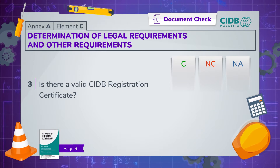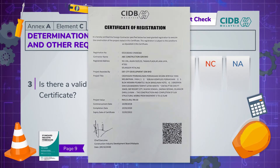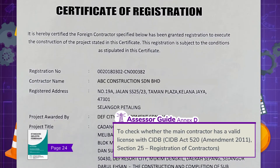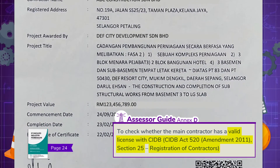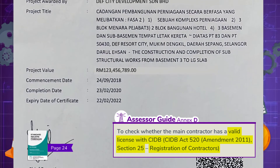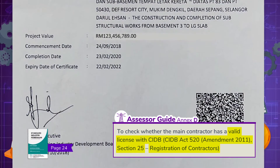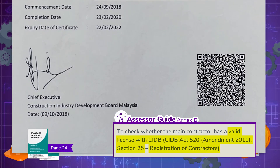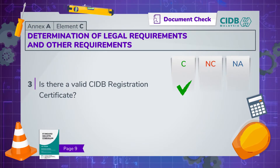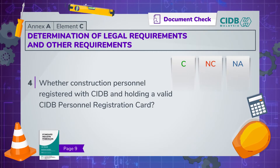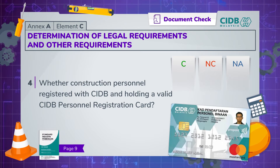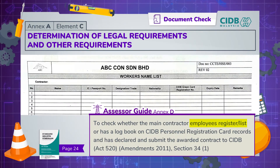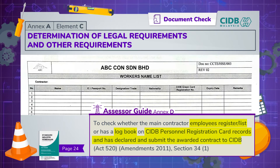Ask for the CIDB registration certificate. Note that in the Assessor Guide, CIDB Act 520, Amendment 2011, Section 25 refers to the registration of contractors. Check if all construction personnel are registered with CIDB and that each of them is holding a valid CIDB personnel registration card. The main contractor should have an employee register, list or logbook on CIDB personnel registration card records and should have declared and submitted the awarded contract to CIDB.